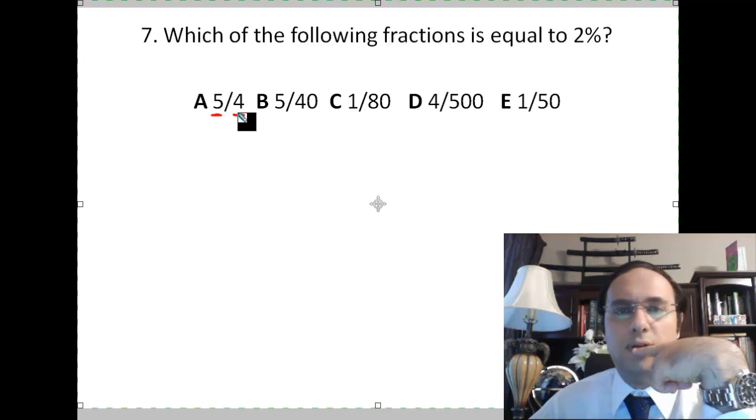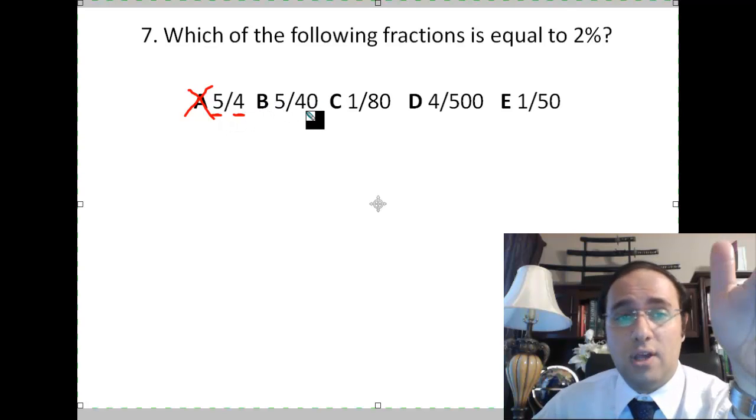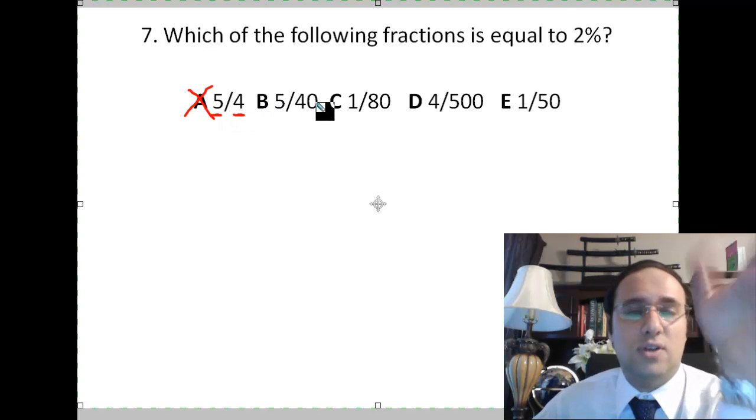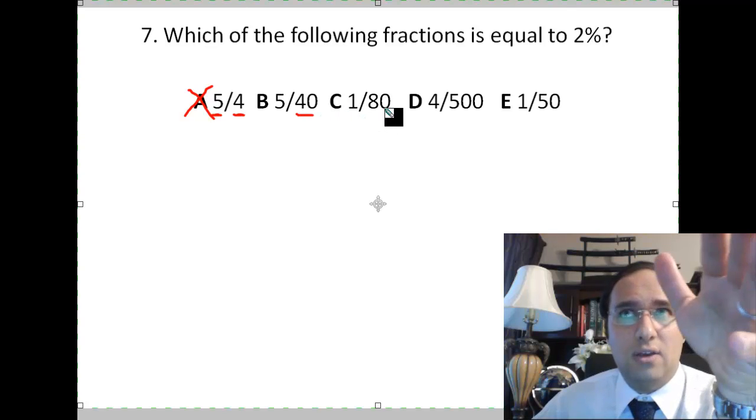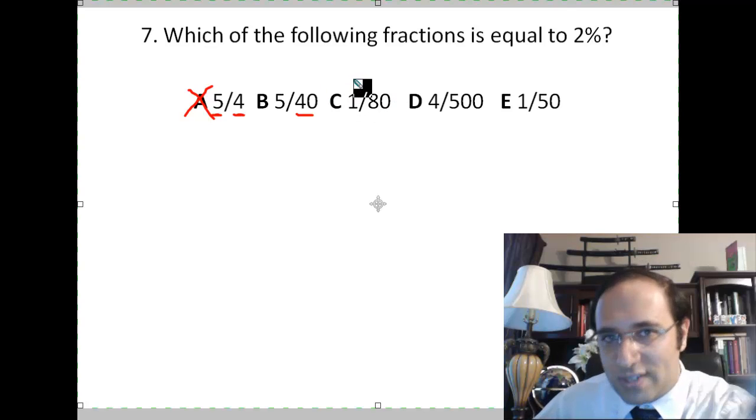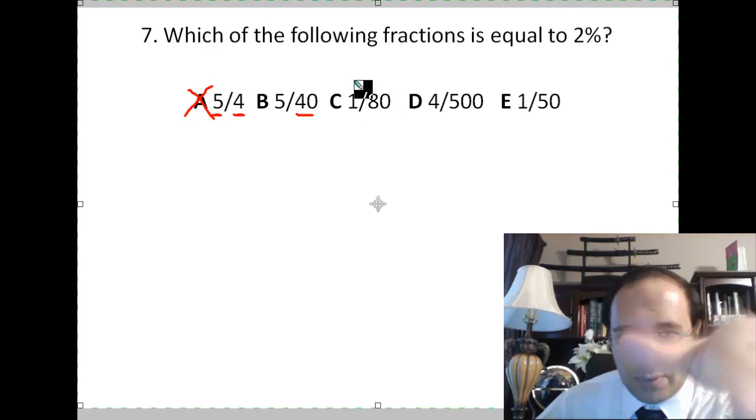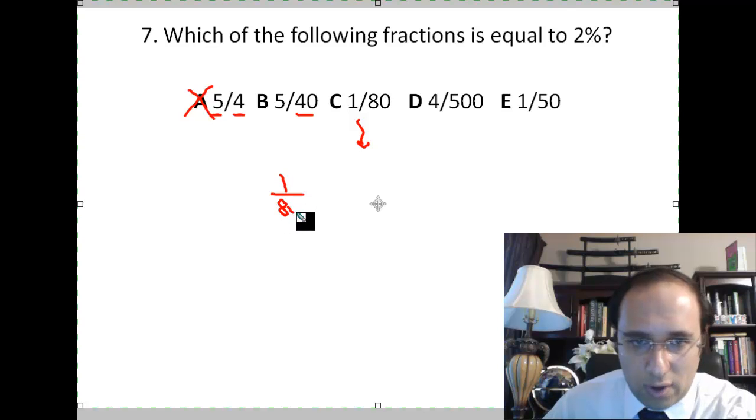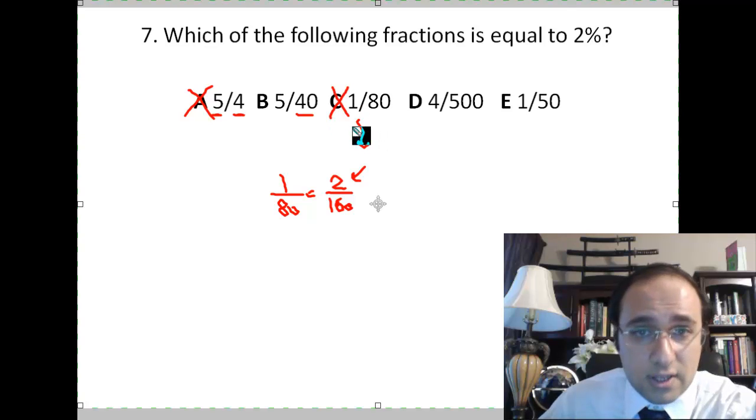Let's take a look at A. 5 over 4. The numerator is bigger than the denominator, so that's more than 100 percent. Definitely not 2 percent. 5 over 40. I need to change the 40 into 100. That's going to take some time. Let's leave it. 1 over 80. I want it to be 2 over 100. If I multiply by 2, I get 2 over 160. If I want the 1 to become 2, then I must multiply the 80 by 2 as well. 1 over 80 equals 2 over 160. I want it to be 2 over 100, and here it's 2 over 160, so it's definitely not C.